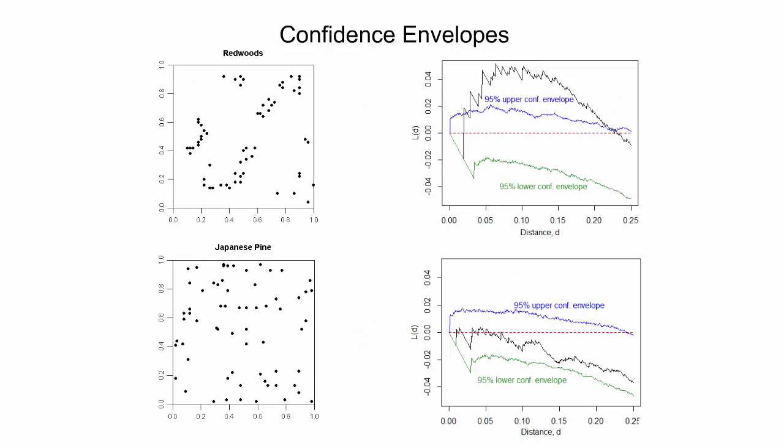The diagrams to the right show the 95% confidence envelopes for random point patterns containing the same number of points as those in the Redwood and Japanese pine datasets. The confidence envelope is based on 999 simulations. The blue curve shows the upper and the green line the lower simulation envelope. For the redwood point data, over a distance band from around 0.02 to 0.2, the observed pattern is more clustered than a point pattern under complete spatial randomness. For the Japanese pine data, the observed L function lies within the confidence envelope over the complete plotted distance range, indicating the point pattern was generated by an independent random process. Simulation envelopes can also be developed for G, F, and K functions.